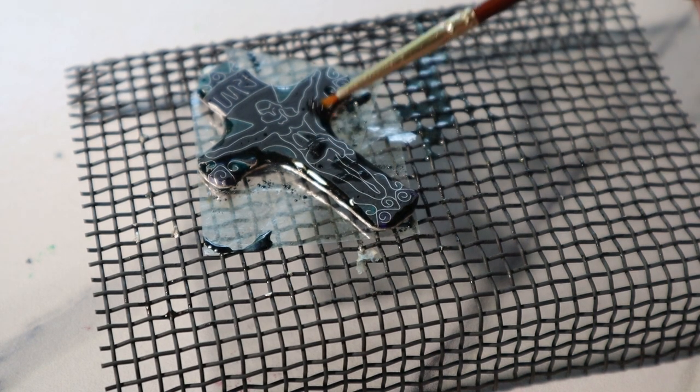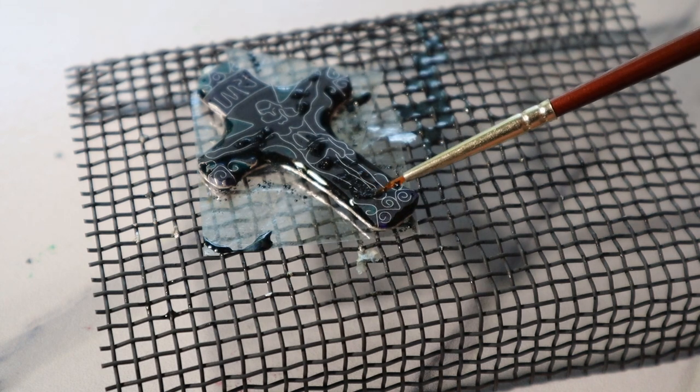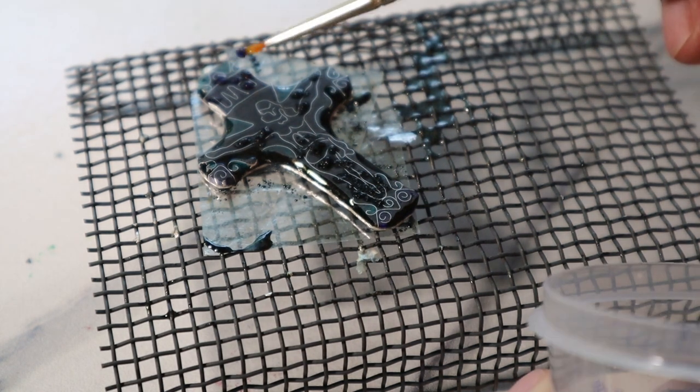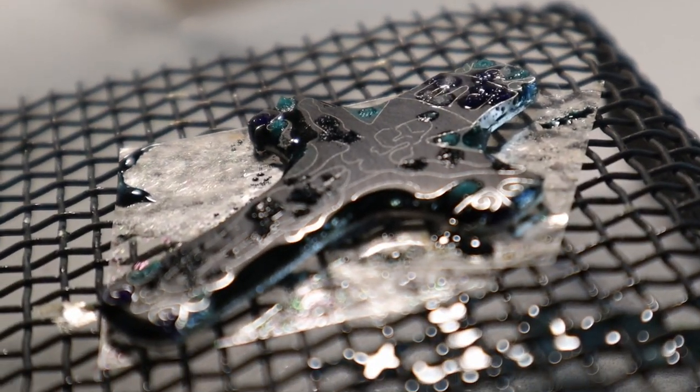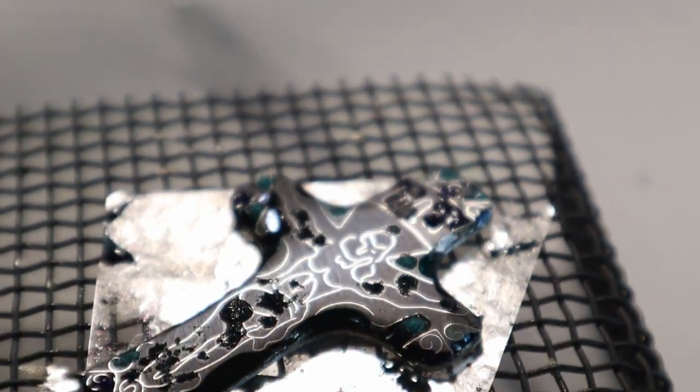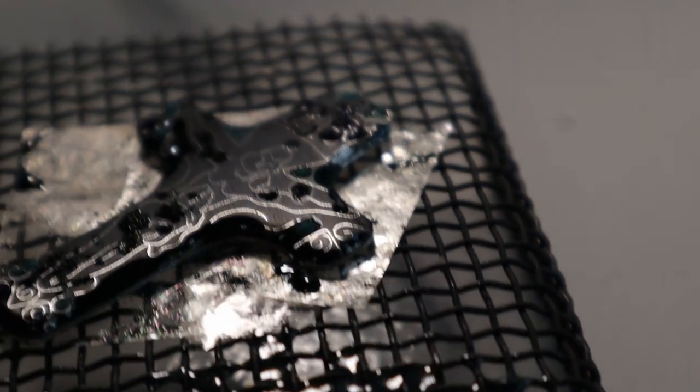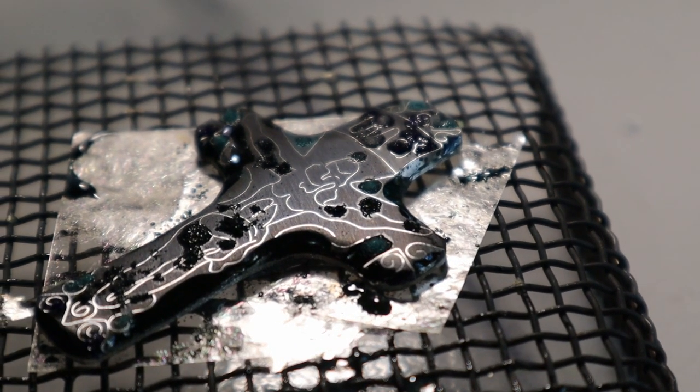It should be smooth and the surface should be straight. We don't need any bubbles, any cracks, nothing at all. There we go. This is our added powders, enamels.